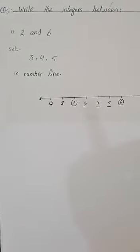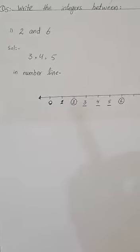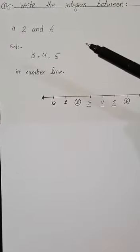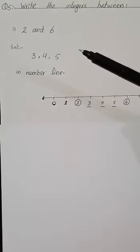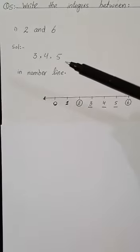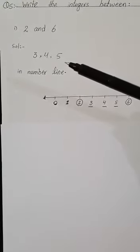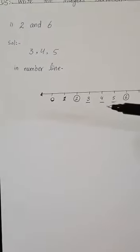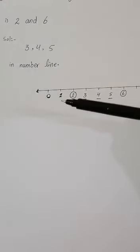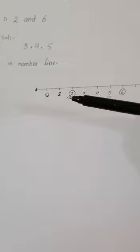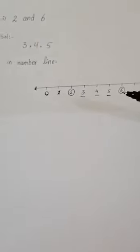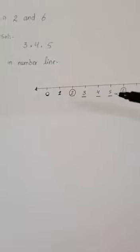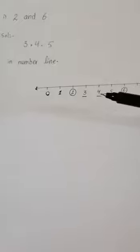Now look at question number 5: write the integers between. Between 2 and 6 — both are positive numbers — the numbers between them are 3, 4, and 5. It's a very simple answer. If we want to give the answer using the number line, first draw the number line, then since we have both positive numbers, start from 0 and write positive numbers on the right side: 1, 2, 3, 4, 5, and 6. In between 2 and 6, we circle the numbers 3, 4, and 5.